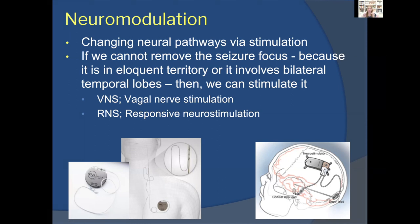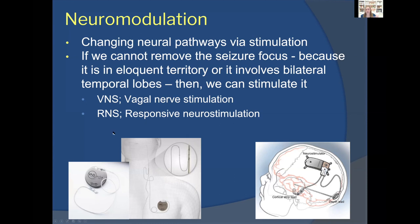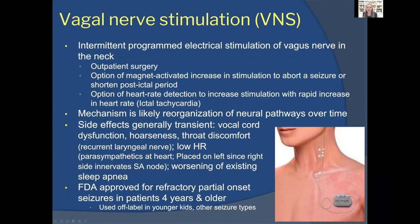Sometimes seizures come from both hippocampi, both temporal lobes broadly, or from eloquent tissue where language is located — making resection impossible. In those cases, stimulation may be offered. Two main options are vagal nerve stimulation (VNS) and responsive neurostimulation (RNS). Deep brain stimulation (DBS) is still under investigation but may eventually become an epilepsy treatment. VNS involves placing a stimulator in the chest with electrodes wrapped around a cervical nerve, programmed to send electrical signals every few minutes up to the brain to gradually reorganize neural pathways.